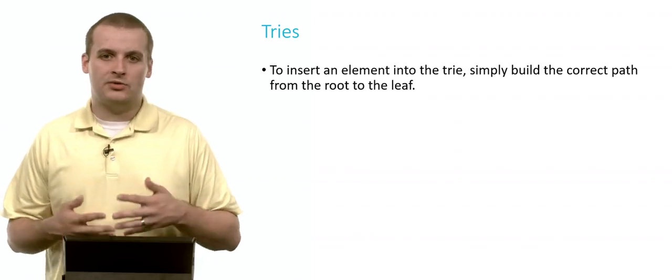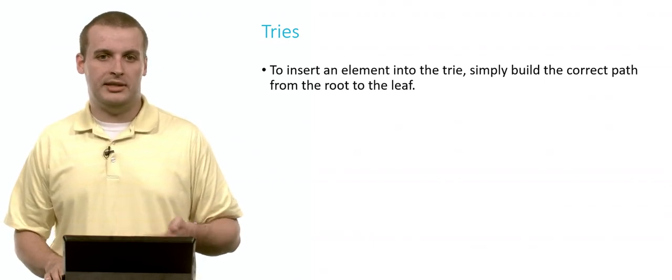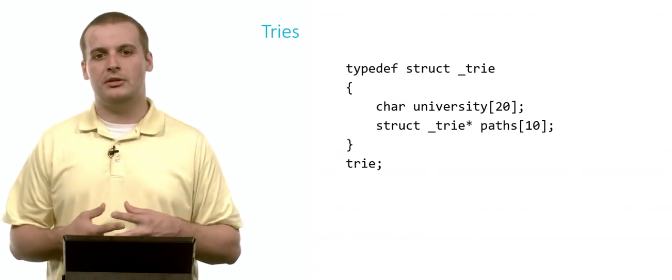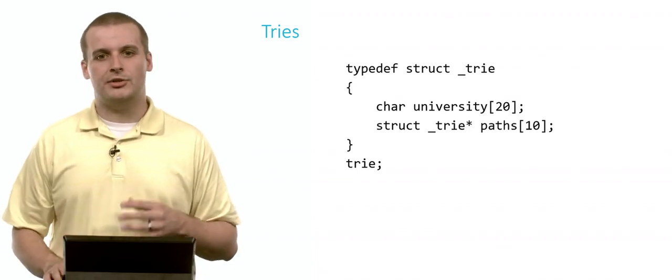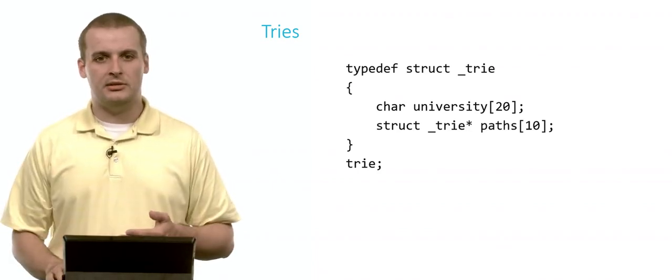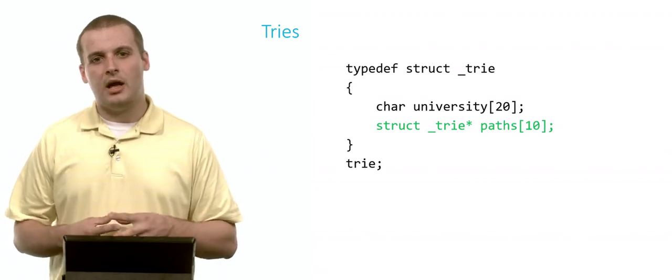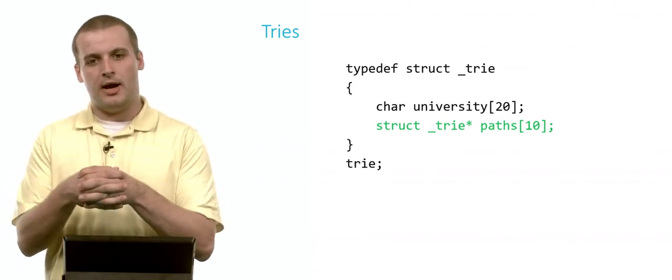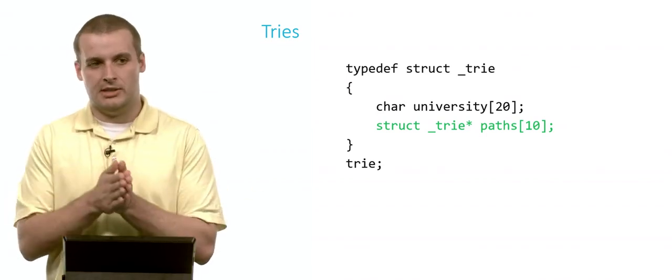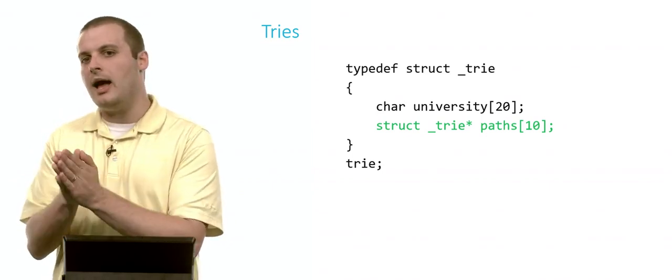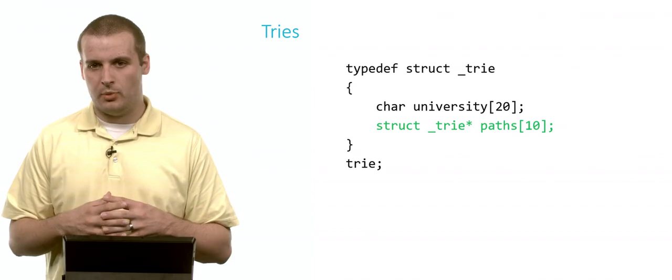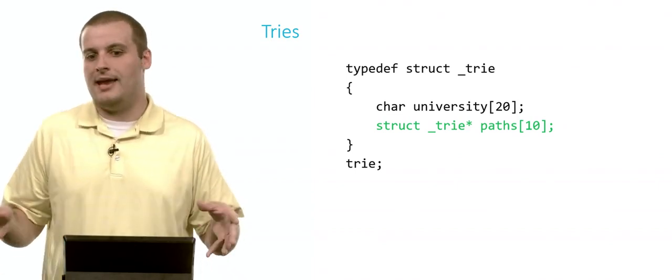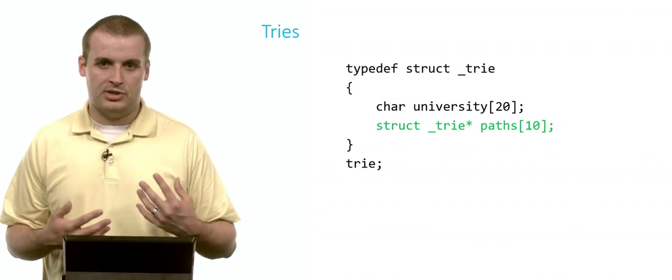If we want to insert an element into the trie, all we need to do is build the correct path from the root to the leaf. We're going to define a new data structure for a new node called a trie. And inside of that data structure, there are two pieces. We're going to store the name of a university, and we're going to store an array of pointers to other nodes of the same type. So this is that concept of everywhere we are, we have 10 possible places we can go.